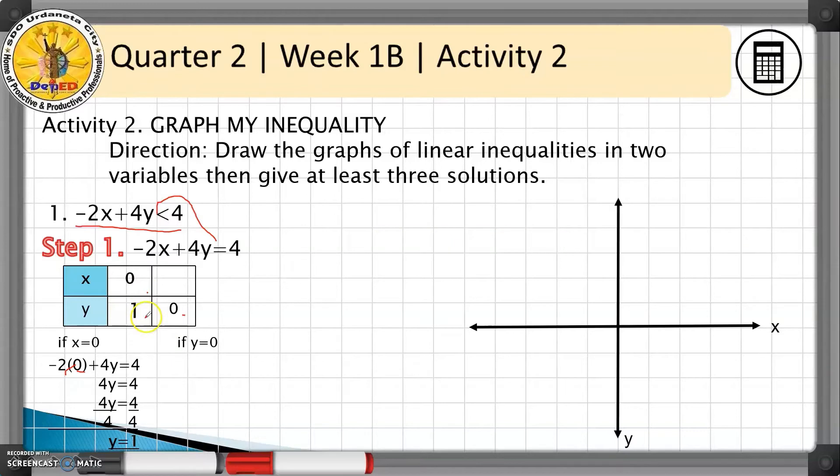Next, let's assume that y equals 0 and compute for x. We have -2x + 4(0) = 4, which gives us -2x = 4. Dividing both sides by -2, we obtain x = -2. So the next point is (-2, 0).